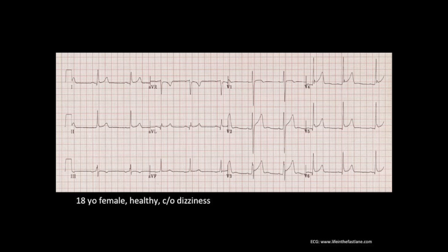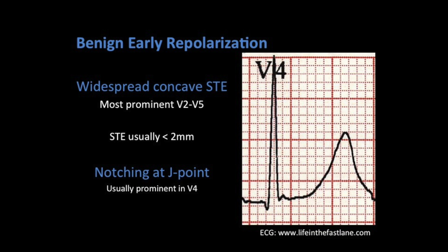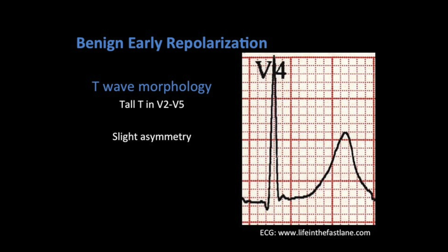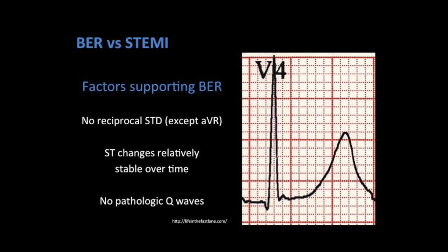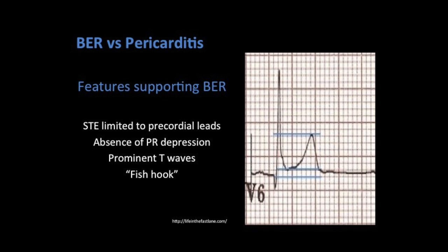This next ECG is an 18-year-old female, otherwise healthy, complaining of dizziness. This morphology is very classic for benign early repolarization, also known as J-point elevation. Classic findings on ECG are widespread concave ST elevation most prominent in the anterior leads, and notching at the J-point usually most prominent at V4. T waves are usually tall in V2 through V5 and slightly asymmetric. Factors that support benign early repolarization include no reciprocal ST depressions except maybe AVR, ST changes relatively stable over time, and no pathologic Q waves. Features that help differentiate from pericarditis include ST elevation limited to precordial leads, absence of PR depression, prominent T waves, and the fishhook or J-point notching especially at lead V4.